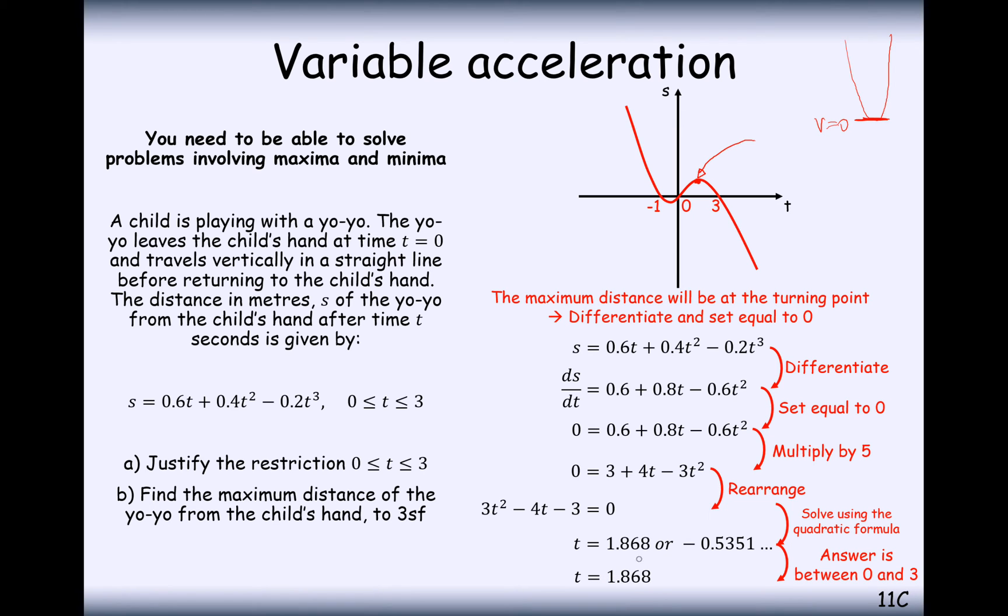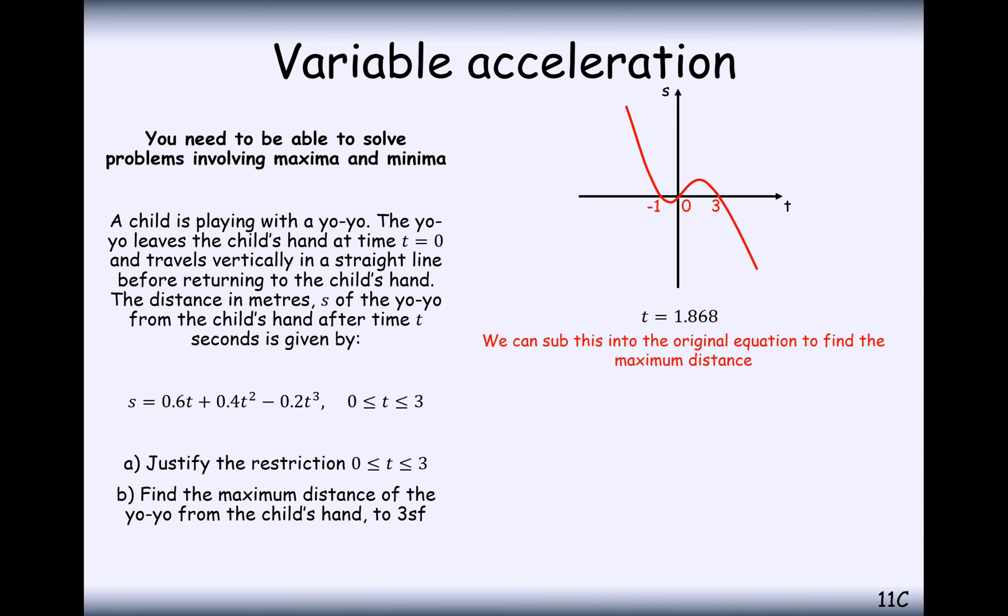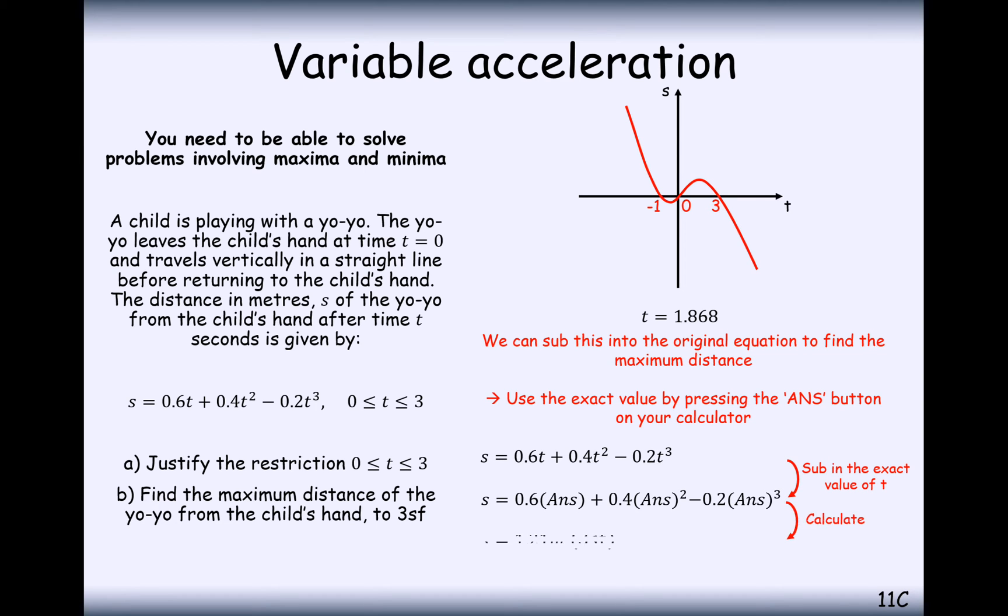So we've got t equals 1.868. Now, what I would do, that's probably a really long decimal number. What we've got to then do to work out the distance is substitute this back into our distance formula here. So using that as the answer button in your calculator, substitute that into your distance formula. And you'll end up with 1.21 to 3 significant figures. So the maximum distance here is 1.21.